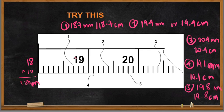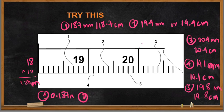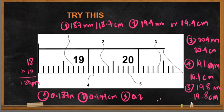We can also express these in meters. For number one: 18.7 cm — since 10 cm is 0.1 m, 18.7 cm becomes 0.187 meters. For number two: 19.4 cm becomes 0.194 meters. For number three: 20.4 cm — since 20 cm is 0.2 m, that is 0.204 meters. For number four: 19.1 cm becomes 0.191 meters.